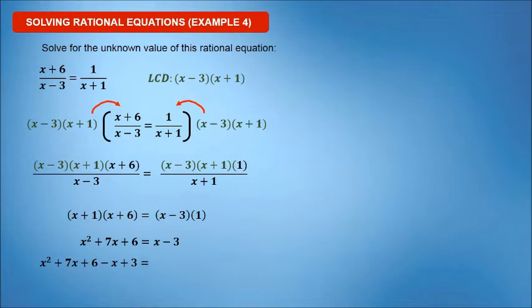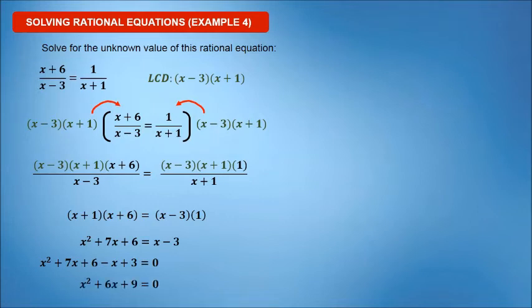Simplify further to form a quadratic equation. By transposing x minus 3 to the left side, the equation will become x squared plus 7x plus 6 minus 6 plus 3 is equal to 0. Combining like terms, the result is x squared plus 6x plus 9 is equal to 0.